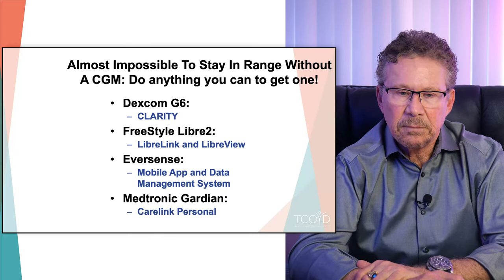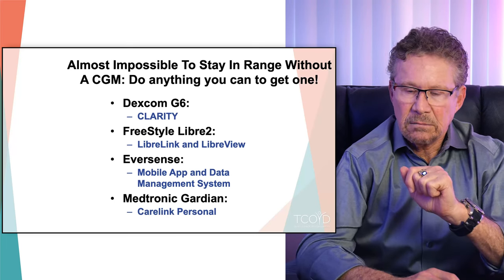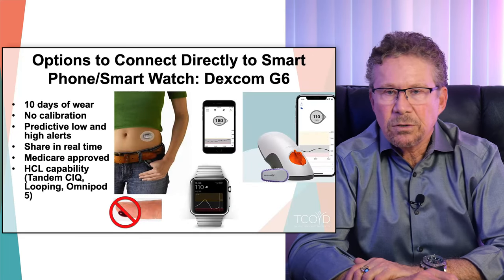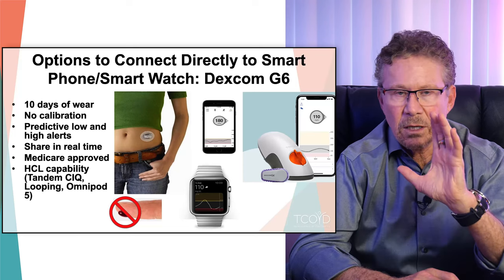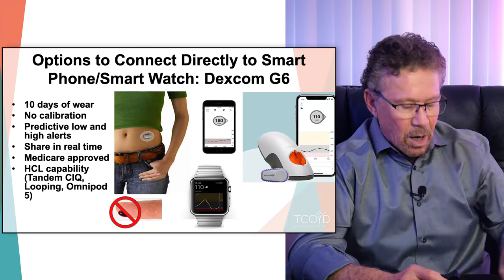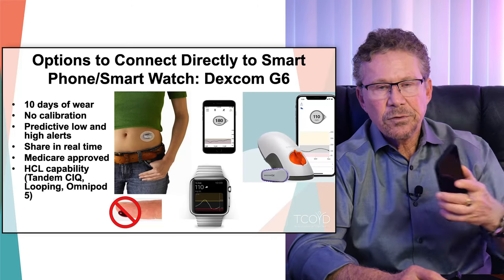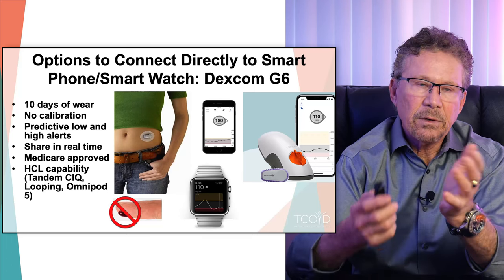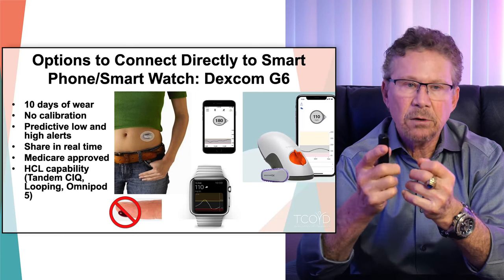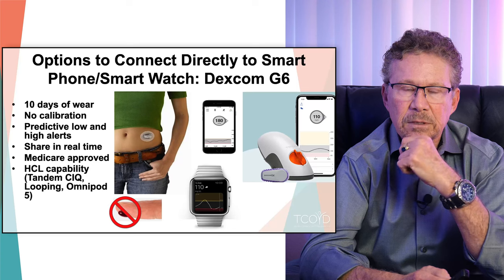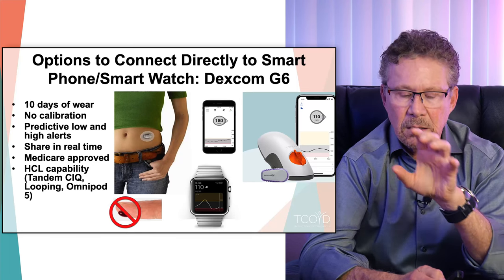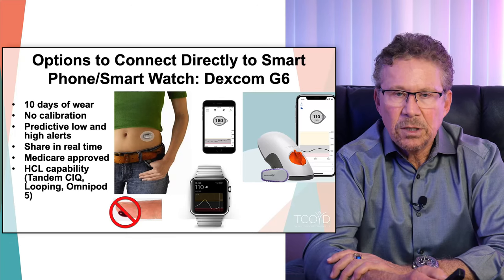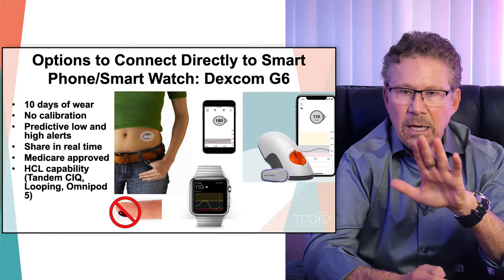I am going to mention the Medtronic Guardian. It's not used very much and has a lot of issues, but it's certainly better than not having a CGM at all. Here's a picture of the Dexcom G6 — you can get the numbers right on your watch, a monitor, or your cell phone. It lasts 10 days, requires no calibration (though you could calibrate if you like), has all kinds of alerts and alarms, and it is the only CGM that is a partner to pump companies for the hybrid closed loop system. It's probably the leader in the field, especially for type 1 diabetes.